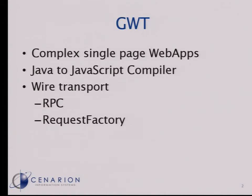There are two types of wire transport for GWT. One is called RPC, Remote Procedure Call, used to define plain data transfer objects which are sent between client and server. And the other one is the Request Factory, which is more elaborated. There the client knows a lot about entities — it knows about IDs, about versions of entities — and this allows the client to reduce the amount of data it needs to send to the server.